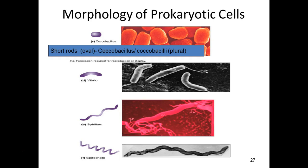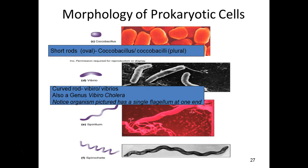A bent rod — that rod shape with a little bend in the middle — is referred to as vibrio. There is a whole genus called Vibrio. Vibrio cholerae, which causes cholera, has this shape. Notice the single flagellum here, which gives them motility. Despite having just one flagellum, these organisms can move incredibly fast.